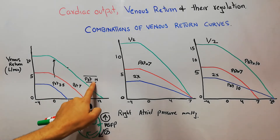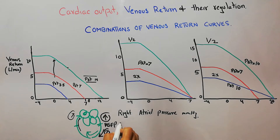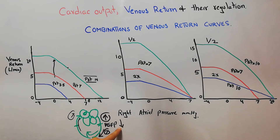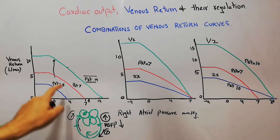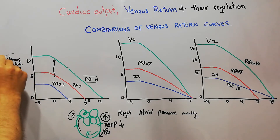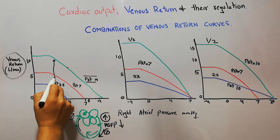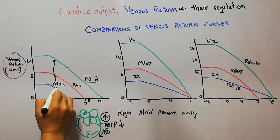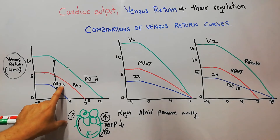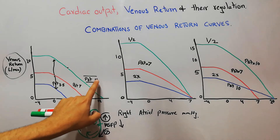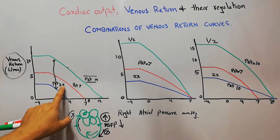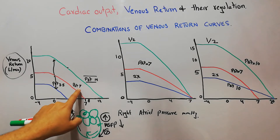If mean systemic filling pressure is decreased, the force pushing blood towards the right atrium is decreased. At each and every right atrial pressure level, the amount of blood returning to the heart will decrease. So the venous return, even at zero right atrial pressure, will decrease. Here it was increased to 14, here it has been decreased to 3.5, and the normal was seven.